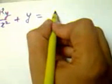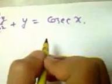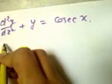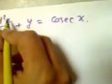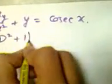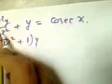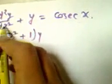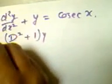I am going to tell you the shortest method by which you can solve this. Let's take a differential equation of second order: d²y/dx² + y = cosec x. We need to find the auxiliary equation of this — replace d²y/dx² by d² + 1 into y. We have replaced d²/dx² with d².